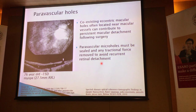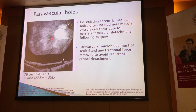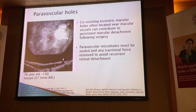What about paravascular holes? This is not something that is often mentioned, but practically speaking we see it quite often, because of how thin the retina is in the posterior pole of these eyes. You will find very often coexisting eccentric macular holes — not in the centre of the macula — but actually along the blood vessels within the macular region. These are called paravascular holes, and these are usually the reasons why, after the macular hole is closed, some cases end up with still a persistent macular detachment. Needless to say, all these paravascular macular holes need to be detected before surgery, sealed during surgery, and any tractional forces need to be removed from around them.